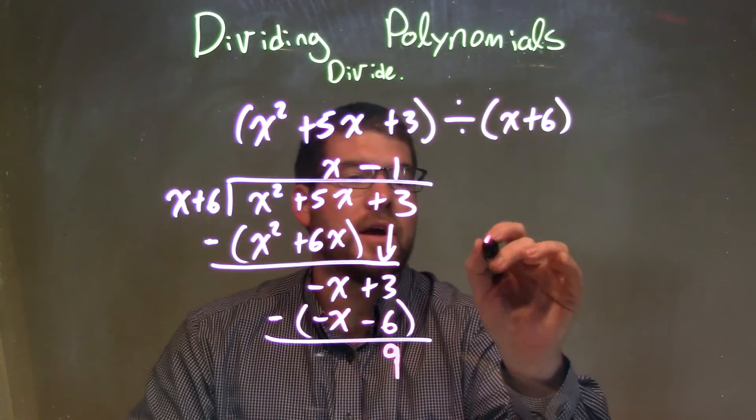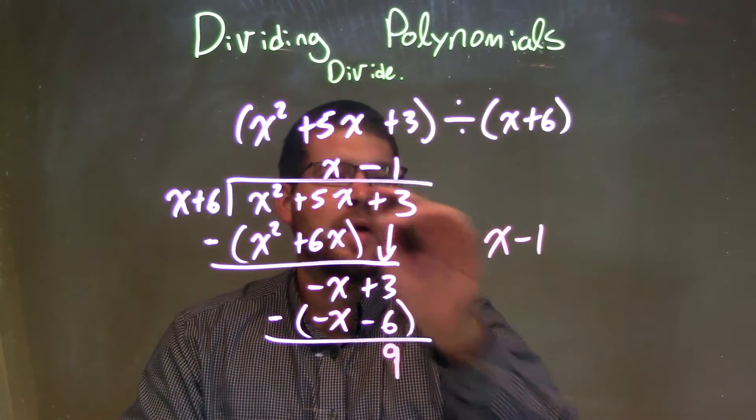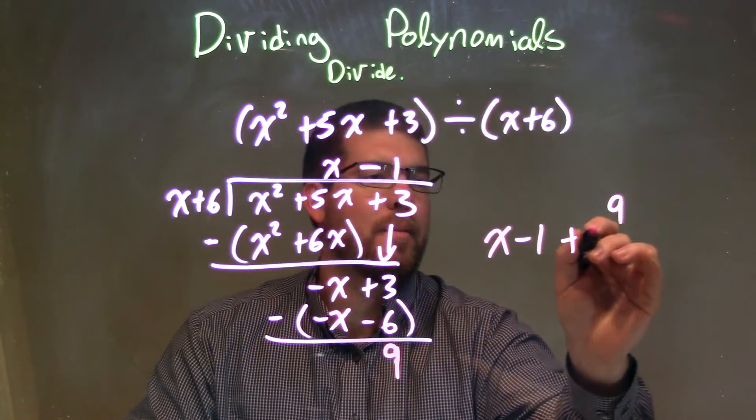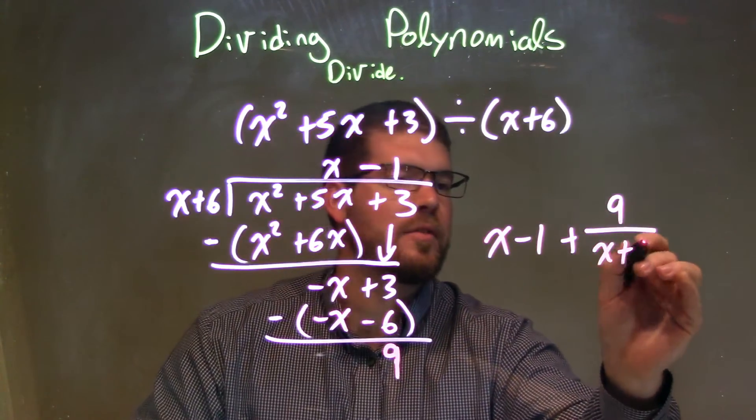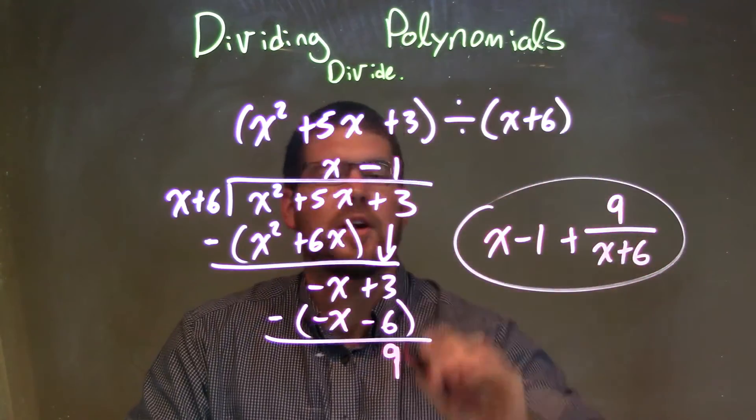So our remainder is 9. So our final answer is just x minus 1, what we wrote up there, plus 9, our remainder, over our divisor, x plus 6. And that is our final answer.